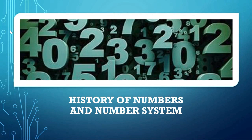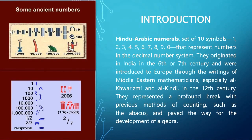Today we are going to present on the topic: history of numbers and number systems. Hindu-Arabic numerals are a set of 10 symbols — 1, 2, 3, 4, 5, 6, 7, 8, 9, and 0 — that represent numbers in the decimal number system. They originated in India in the sixth or seventh century and were introduced to Europe through the writings of Middle Eastern mathematicians, especially Al-Khwarizmi and Al-Kindi in the 12th century. They represented a profound break with previous methods of counting, such as the abacus, and paved the way for the development of algebra.